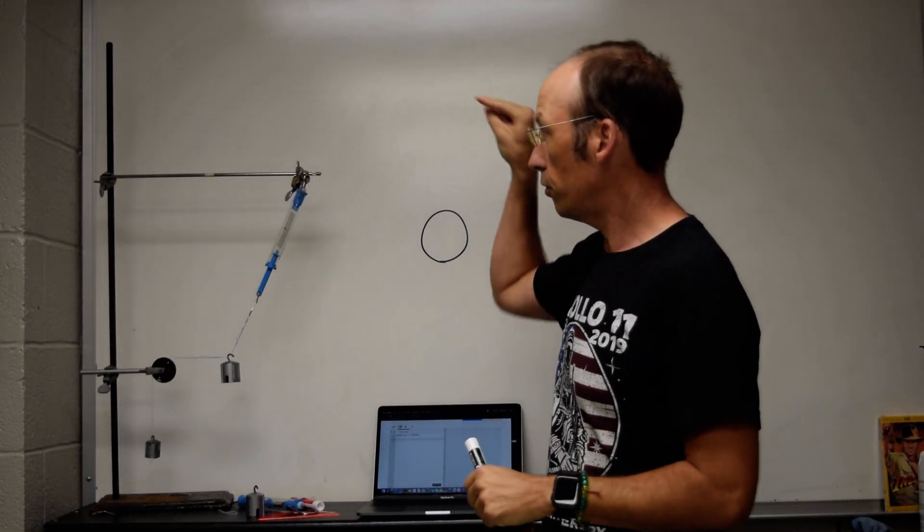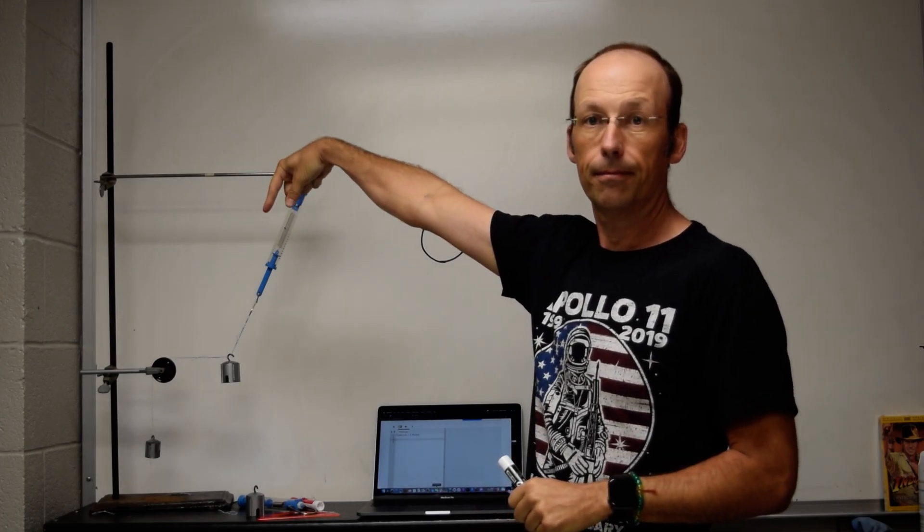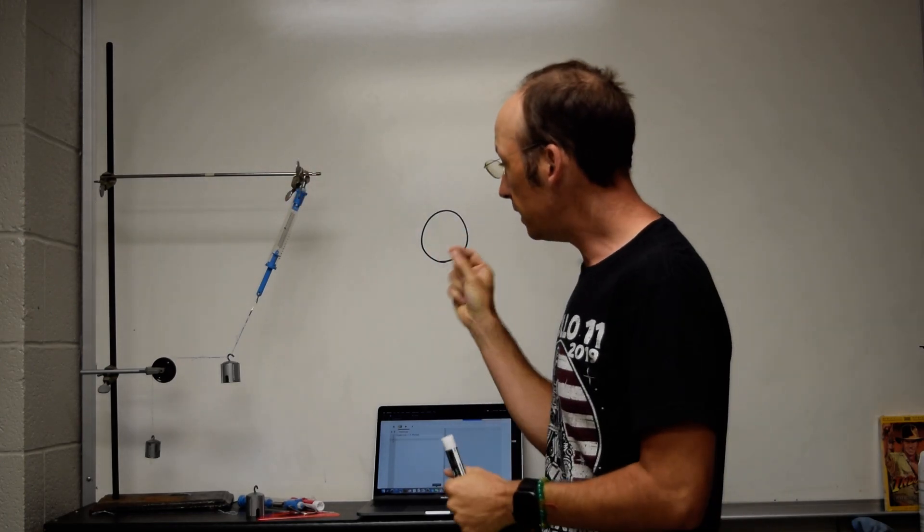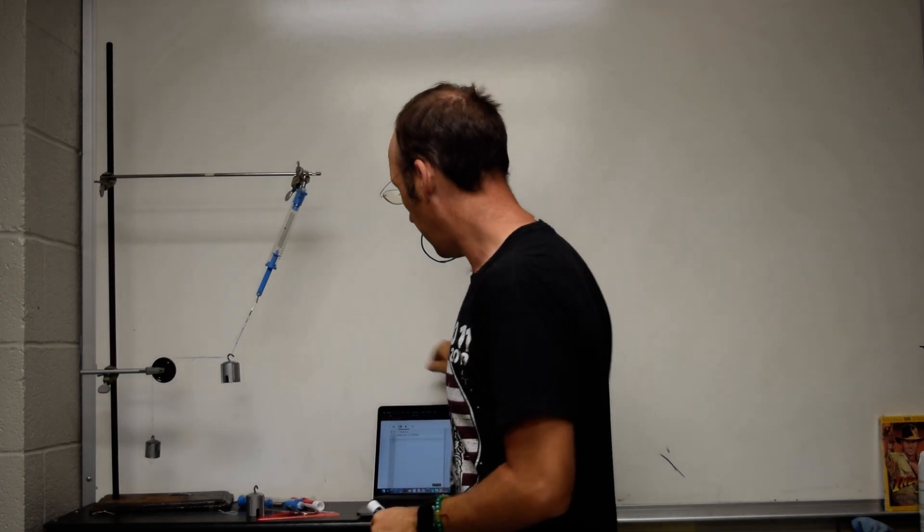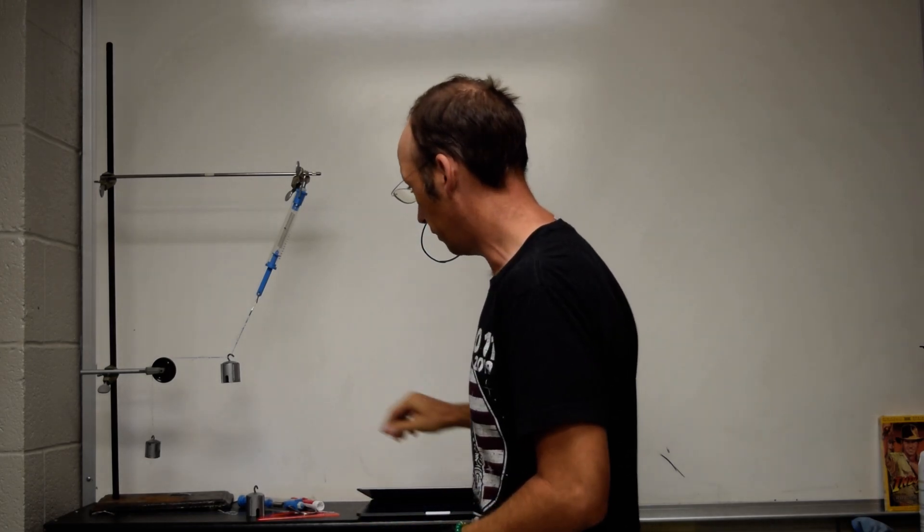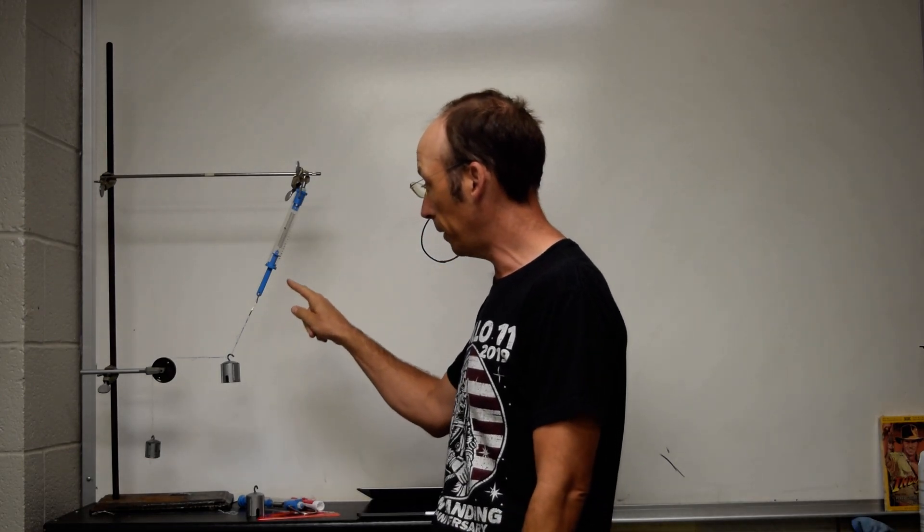Okay, so we're going to do this problem. So this has a mass hanging right here. And it's supported by two strings. There's a string pulling up at an angle and a completely horizontal string. And they're two separate strings. That is important.